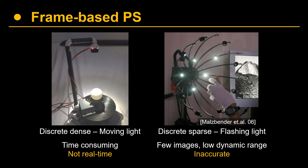For conventional frame-based photometric stereo, methods usually follow one of two lighting setups. One is to move the light source with a robot arm and scan the lighting direction densely — this has the best accuracy, however it is also very time-consuming. The other is to use multiple flashlights placed at fixed positions and turn them on consecutively. This achieves real-time performance, however it is also less accurate due to fewer images and low dynamic range.